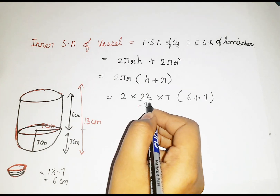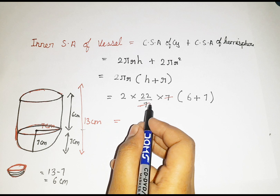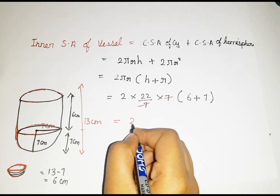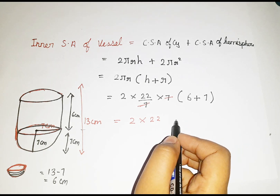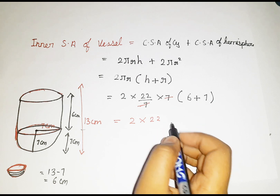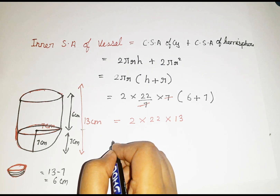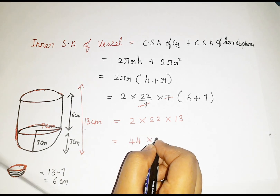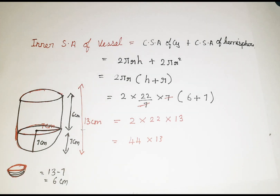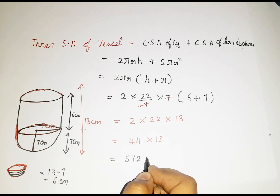Now we can cancel the 7 from 22/7 and the radius 7. So: 2 × 22 × (6 + 7) = 2 × 22 × 13. That is 44 × 13 = 572. The unit is centimetre square.